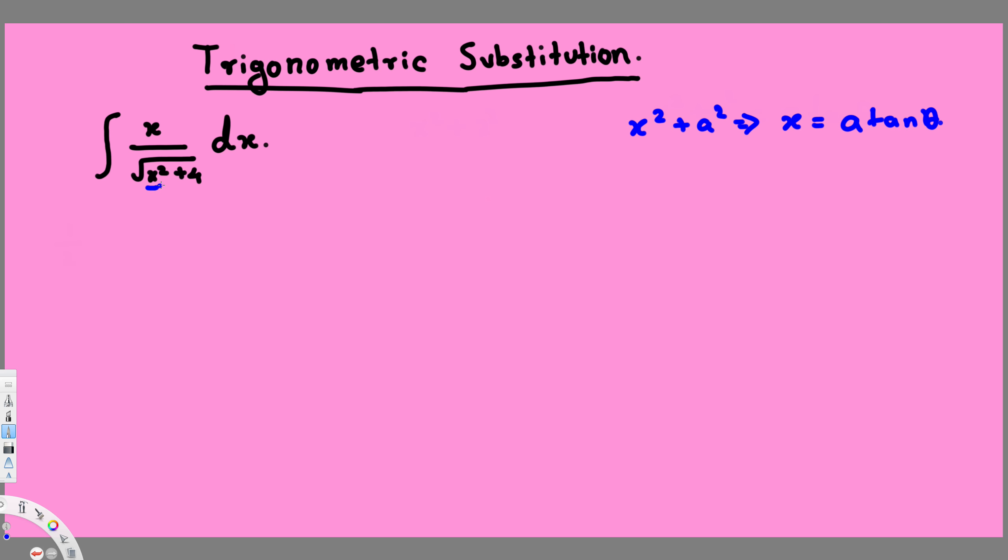Because if you notice, we have x squared and we have x on top, so we have the derivative on top. So whenever you see derivative on top, you can do the u substitution. This is a long process if you do trigonometric substitution, so u-sub will save a lot of time.